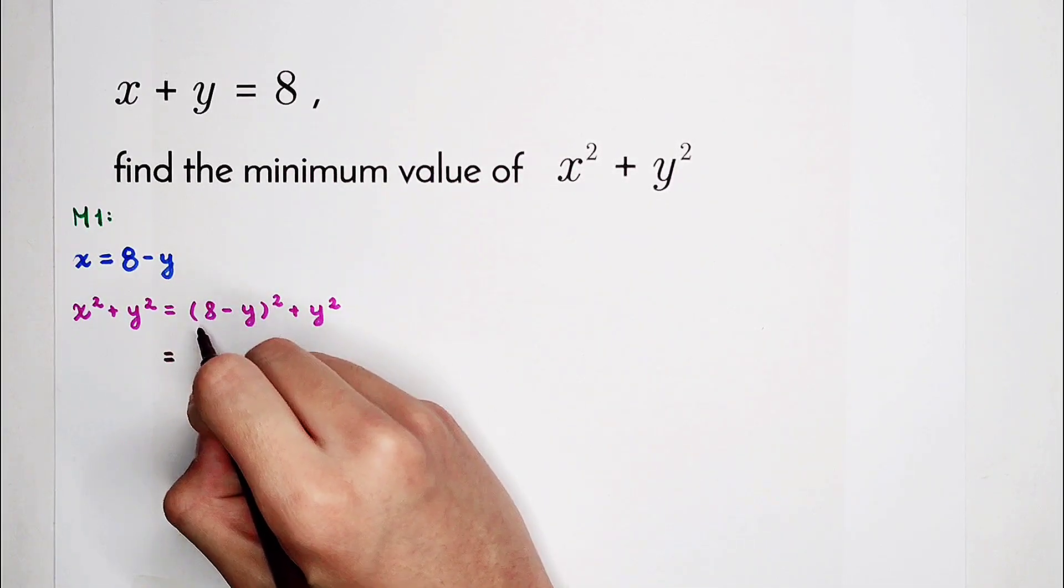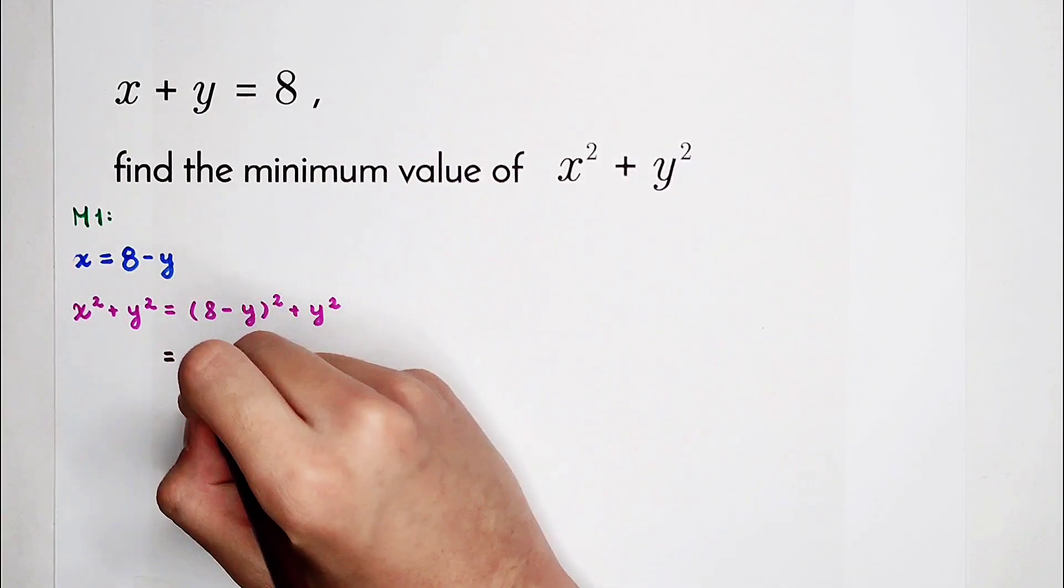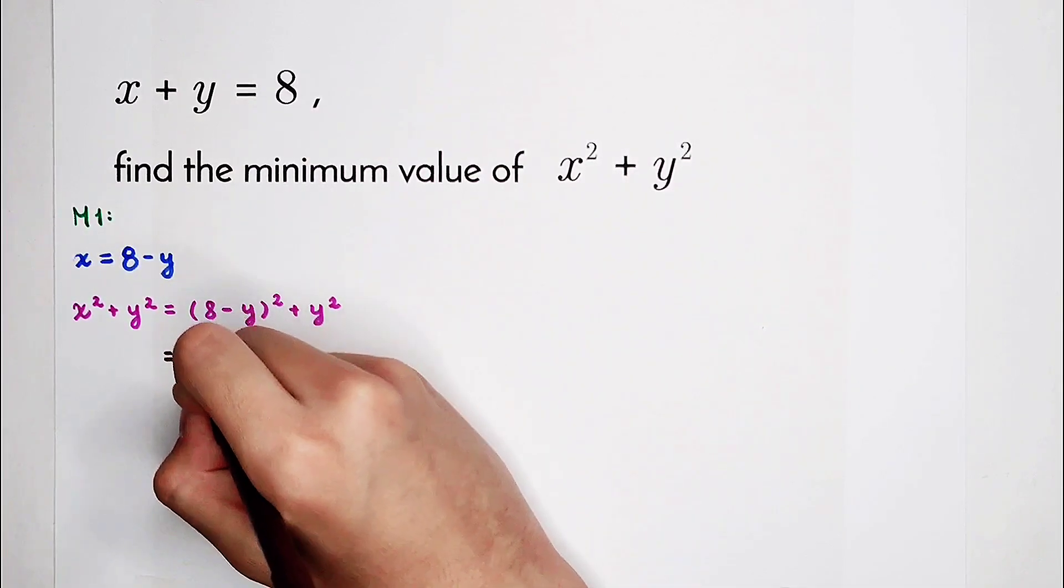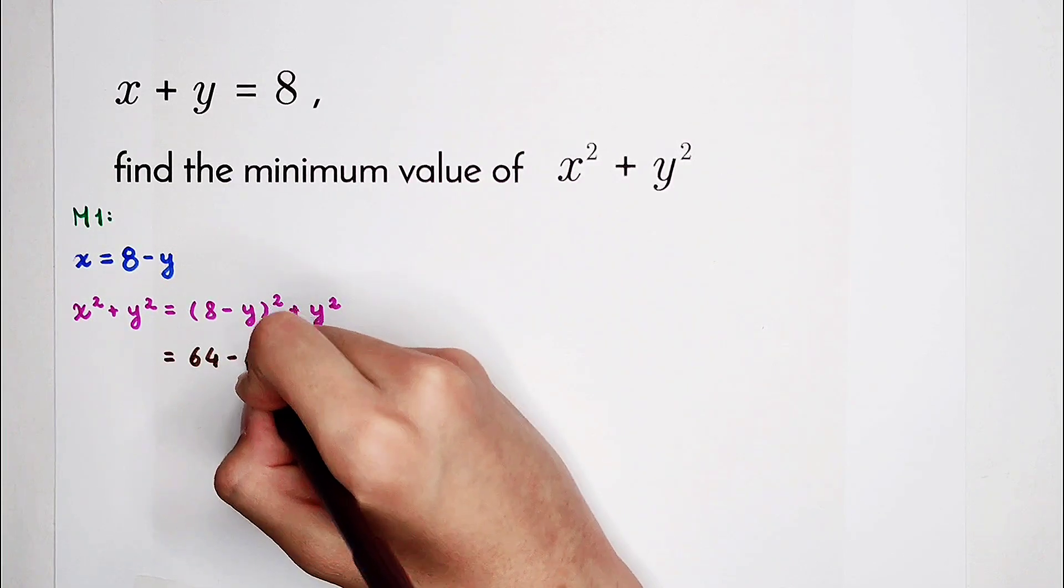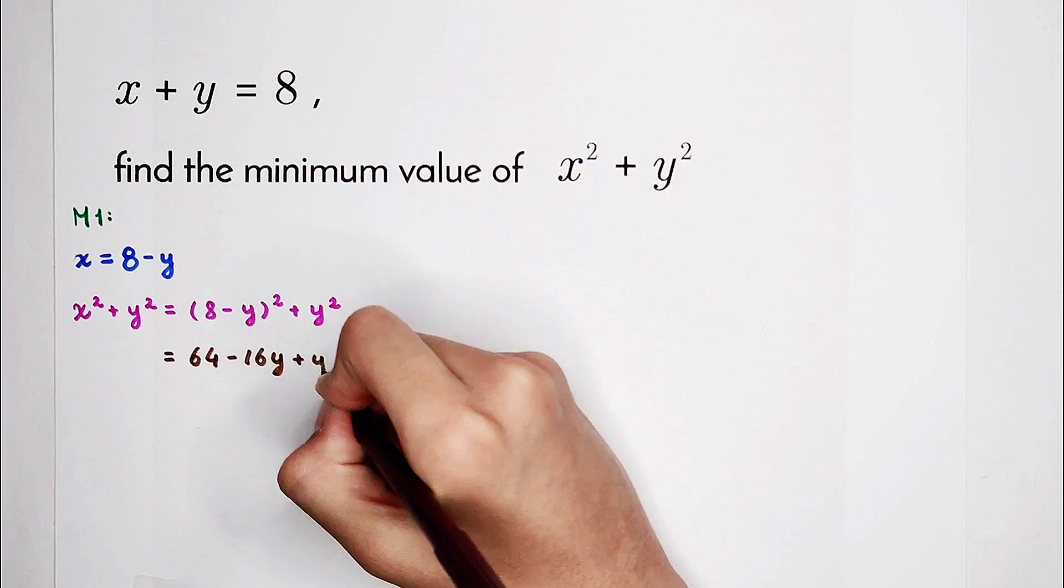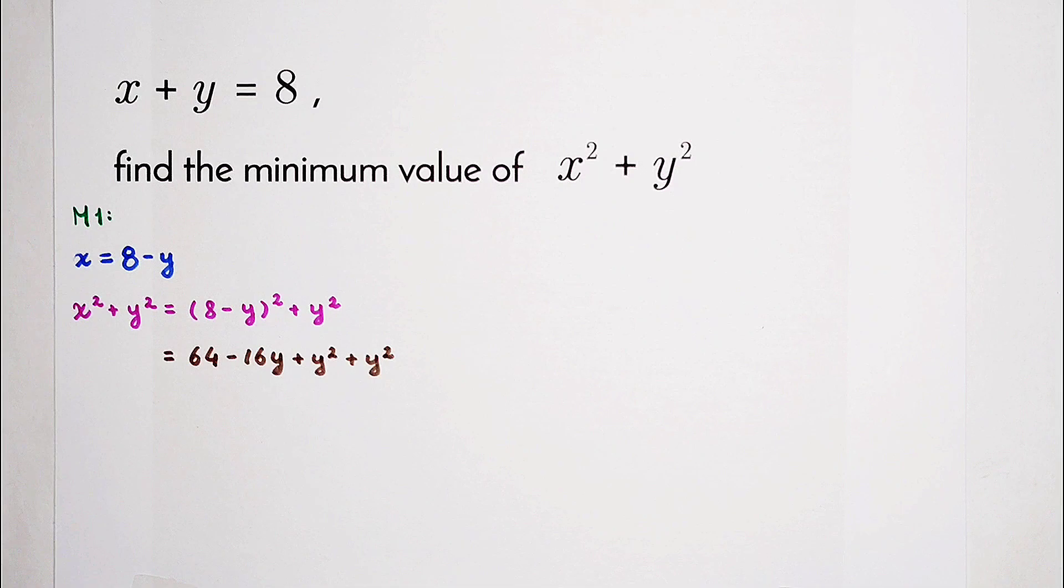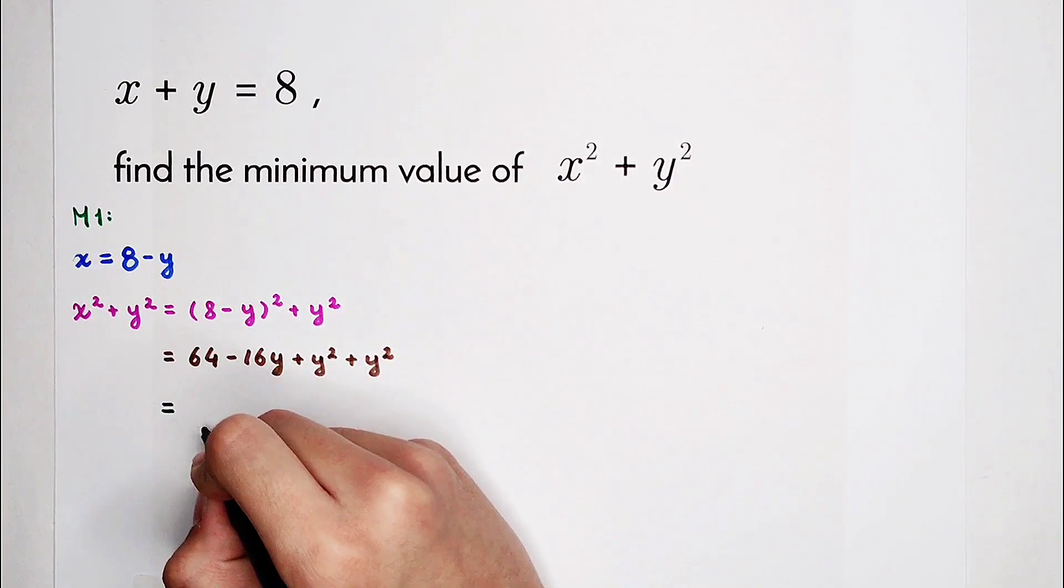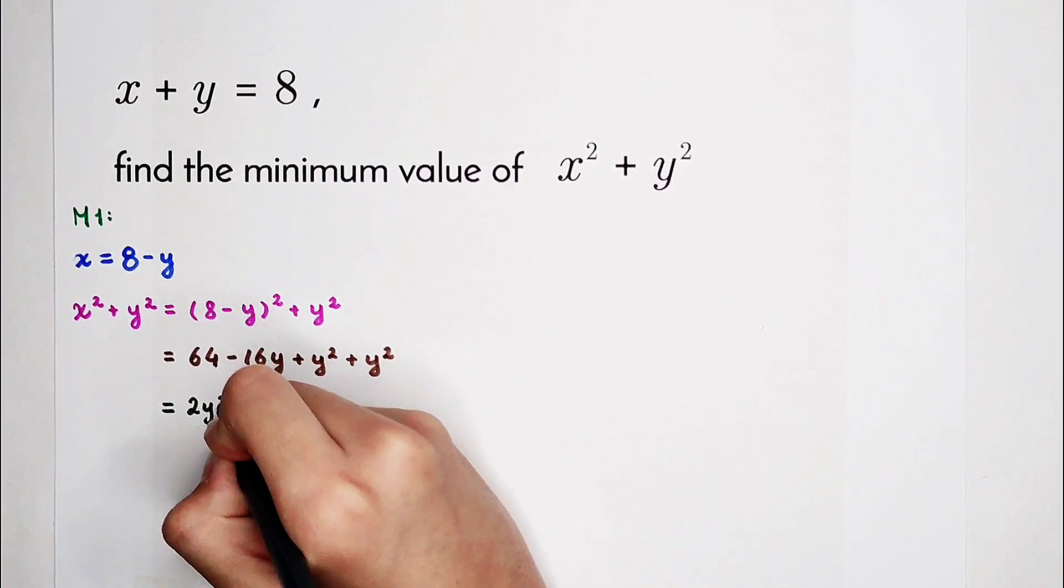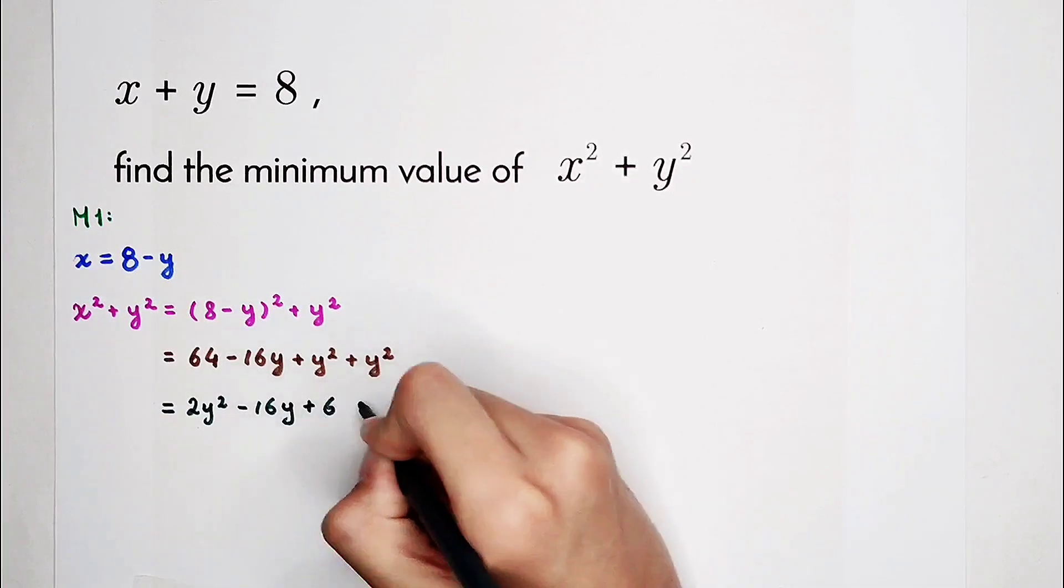Okay, now a minus b all squared is a squared minus 2ab plus b squared. So 8 minus y all squared is 8 squared, 64, minus 2 times 8 times y, minus 16y plus y squared, and then plus y squared. And you can see that - how many y squares are there? Of course, 2. So then, that is 2y squared minus 16y plus 64.